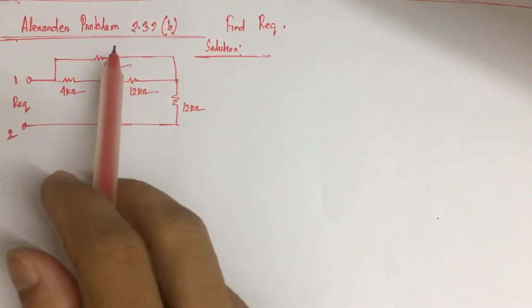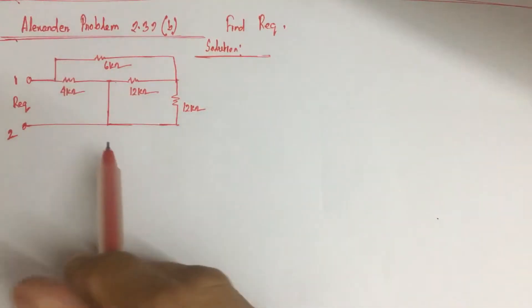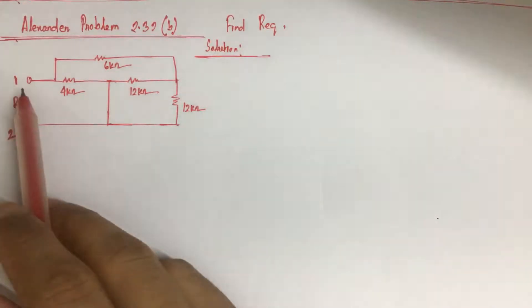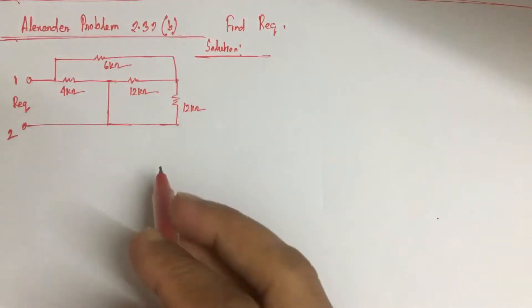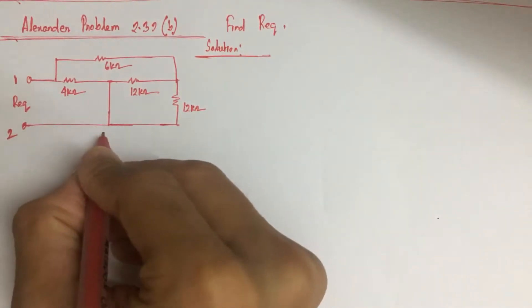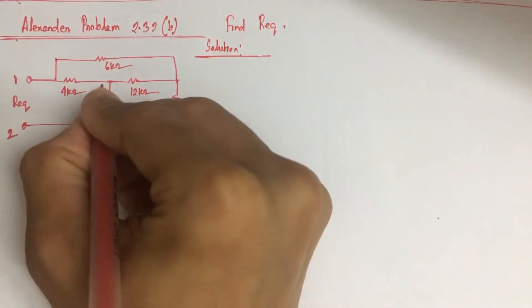Hi viewers, today we will solve problem 2.39 B from Alexander. Here we have to identify the equivalent resistance between point 1 and point 2. We see that this is also point 2, and this is also point 2.